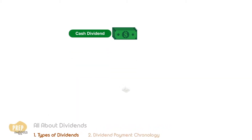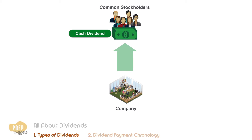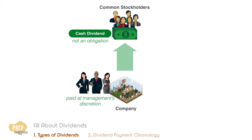A cash dividend is a cash distribution a company makes to its shareholders. When the word dividend is mentioned, it usually refers to cash dividends, unless otherwise stated. Unlike interest payments, dividends to common stockholders are not an obligation, but are entirely up to the discretion of the management.